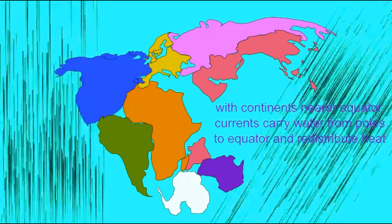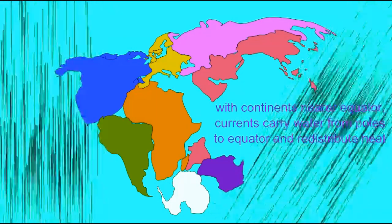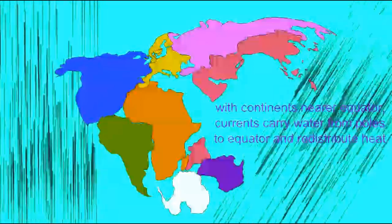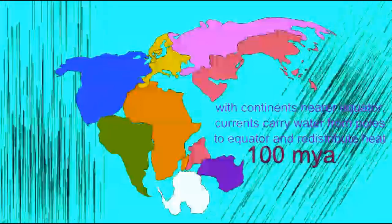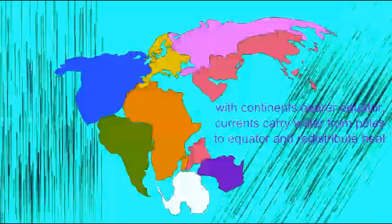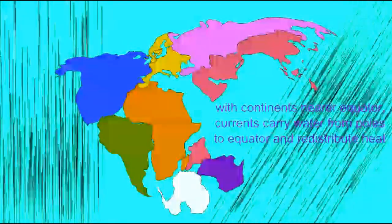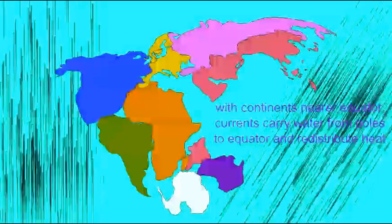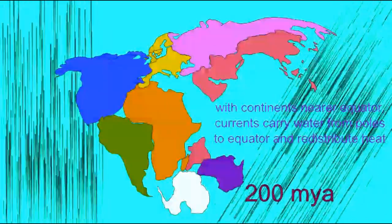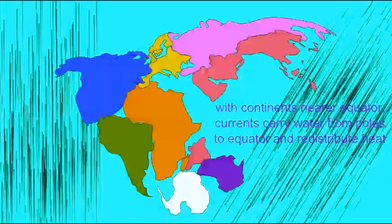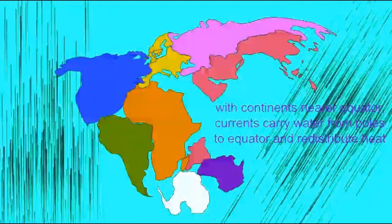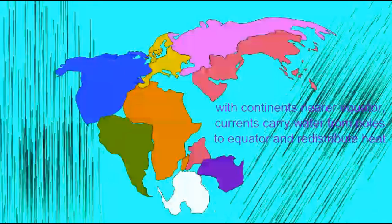What caused this ice age? While ice ages are not entirely understood, a couple things are known. Free flow of ocean currents around the globe helps prevent ice ages. When water can redistribute the heat of our planet easily from equatorial to polar regions, then the global climate tends to be warm.